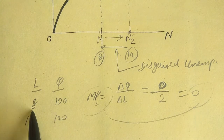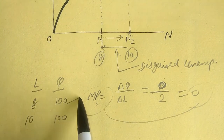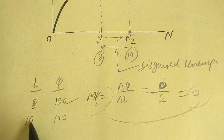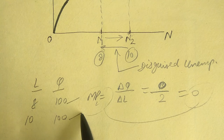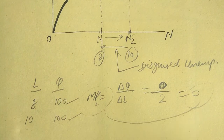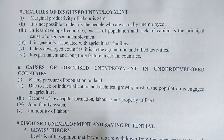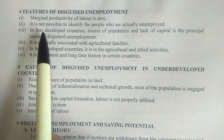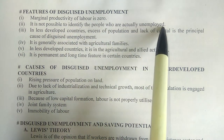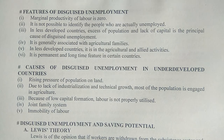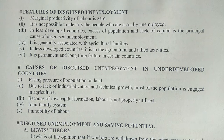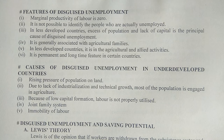Second feature: it is not possible to identify the people who are actually unemployed. We call it 'disguised' — hidden — because we cannot tell which 2 people are the extra ones. When we observe production, all 10 people appear to be working, so we cannot determine which 2 are the extra or idle workers.